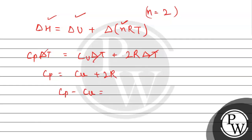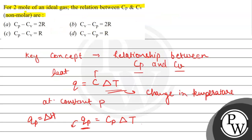Cp − Cv = 2R is our final relationship. According to the given options, option A is the correct match. Options B, C, and D are incorrect. Hope you understood it well. Best of luck.